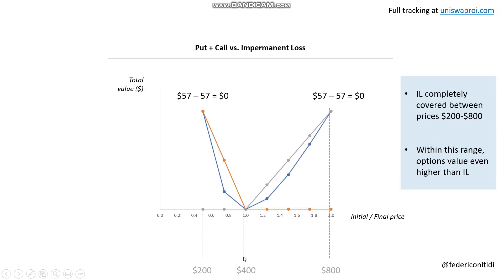If you put everything together, you have the impermanent loss, the put option in orange, and the call option in gray. At the extremes, the value of the put option is $57 and the impermanent loss is minus $57, so net $0 — it's completely hedged. Same thing on the other side: $57 minus $57 equals zero, so it's completely hedged. The impermanent loss is fully covered within the $200 to $800 price range. And within this range, the value of the option is even higher than the impermanent loss per se.